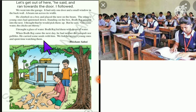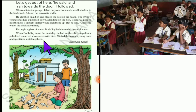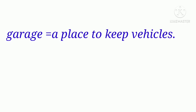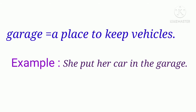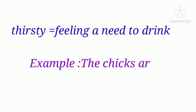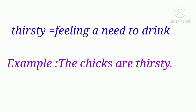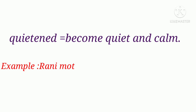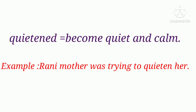Okay dear children, this is our today's lesson. Once you read the lesson, find the new words. Garage: a place to keep vehicles. Example — 'She put her car in the garage.' Thirsty: a feeling of need to drink. Example — 'The chicks are thirsty.' Quietened: became quiet and calm. Example — 'Rani's mother was trying to quieten her.'